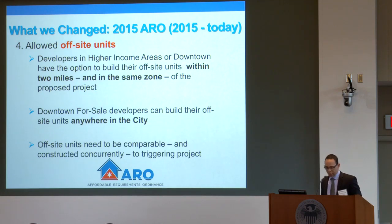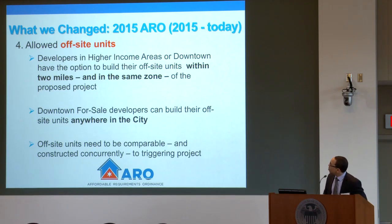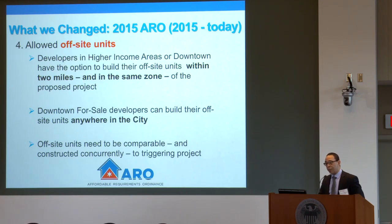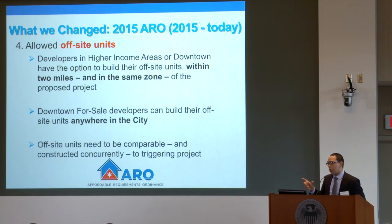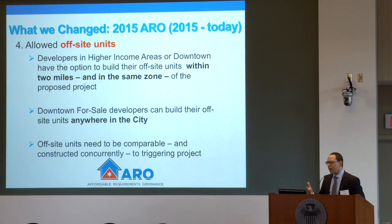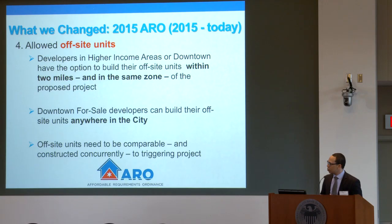For the first time when we redid the 2015 ARO, we allowed off-site units. Developers in higher-income areas and downtown had the option to build their off-site units within two miles of the development and within the same income zone. Downtown for-sale units could be built anywhere in the city, but there just isn't a lot of for-sale development in our downtown D districts. The off-site units needed to be comparable in size and quality and had to be constructed at the same rate — you can't build your triggering project and say you'll get to the affordable ones later.